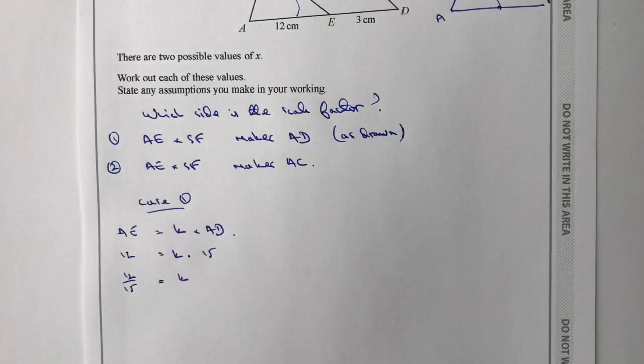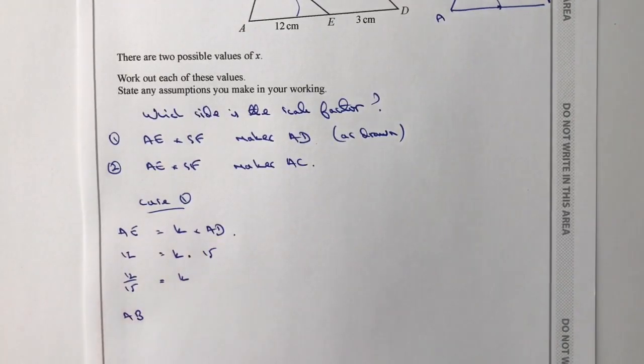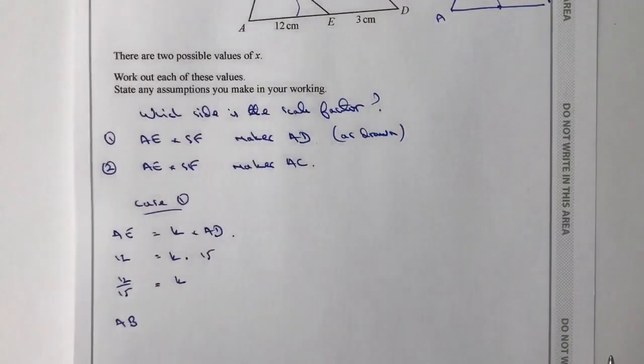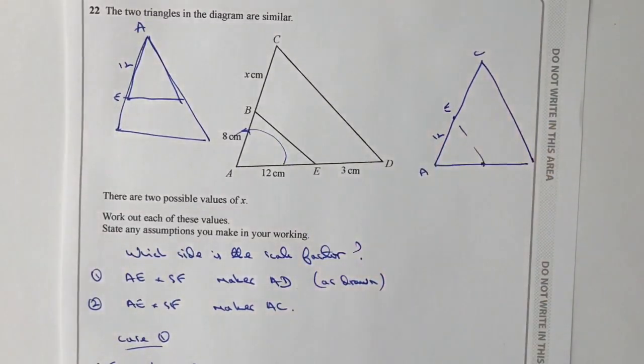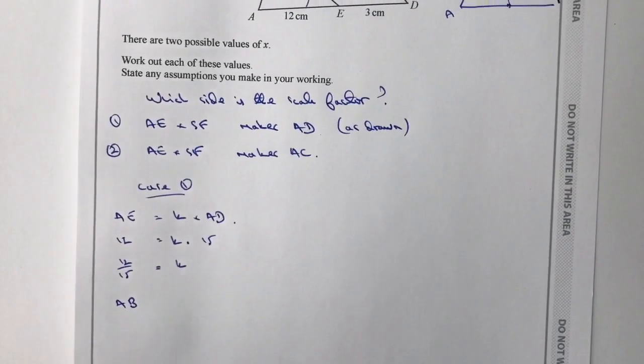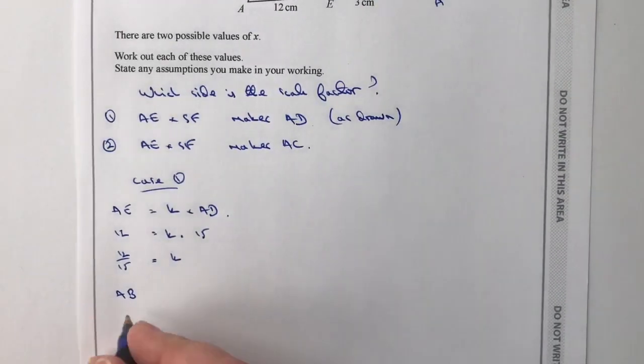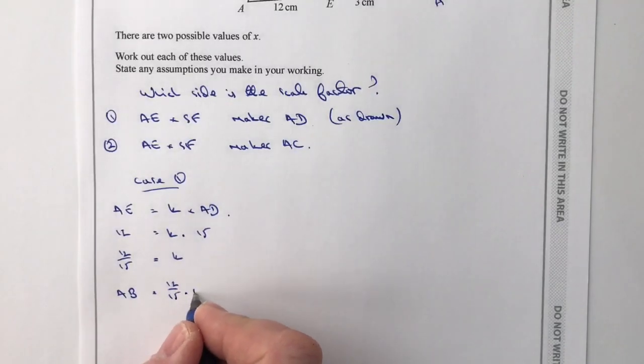So therefore, if I want to work out the value of AB, therefore AB, if I go back here, AB, I can use the scale factor in order to work out the value of X, because AB is going to be equal to 12 fifteenths of AC.